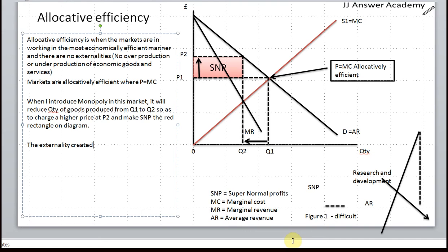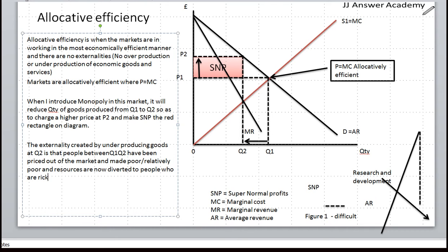The externality created by underproducing goods at Q2 is the people between Q1 and Q2. These people have been priced out of the market and made poor or relatively poor, and resources are now diverted to people who are rich and ultimately well-off.